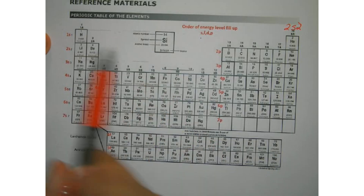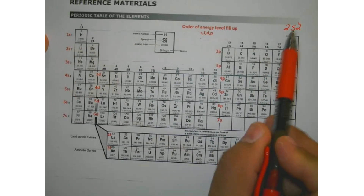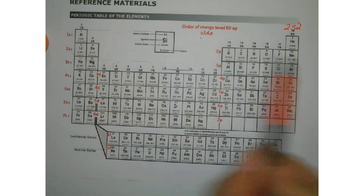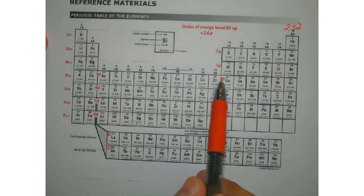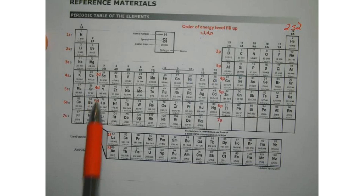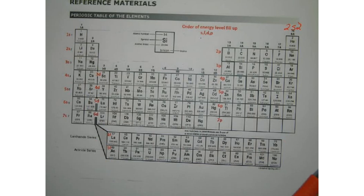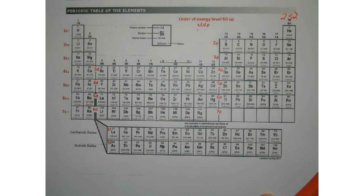The first energy level only contains S electrons — 1S. The second energy level contains S and P. If we drop down to the fourth energy level, we have S, D, and P within that energy level. And if we go all the way to the sixth energy level, look — we have S, F, D, and P. So at higher energy levels we start seeing all four subshells. Remember, we're reading from left to right, so electron configuration follows that same order.